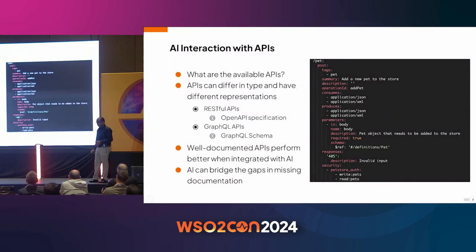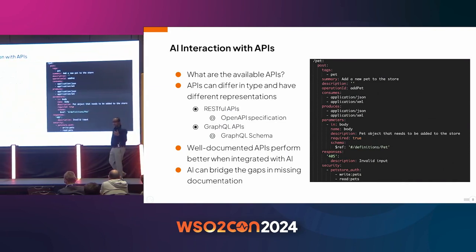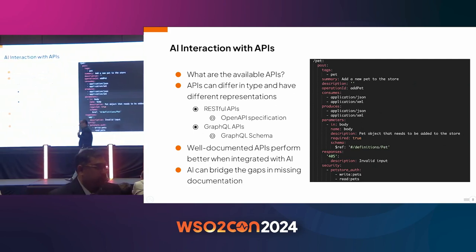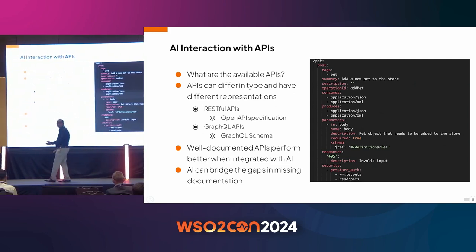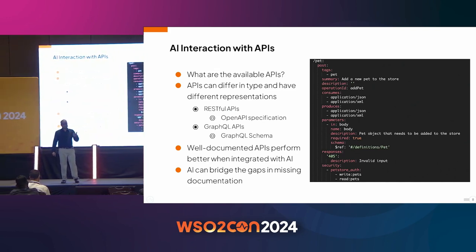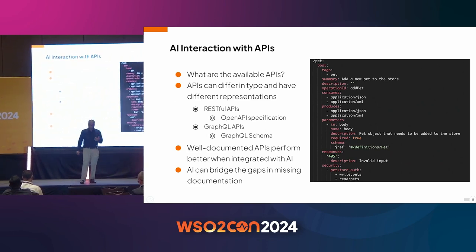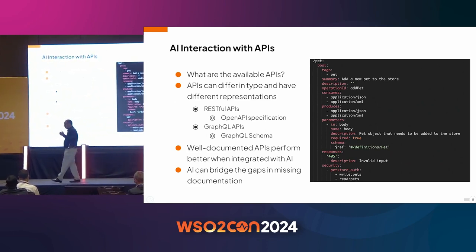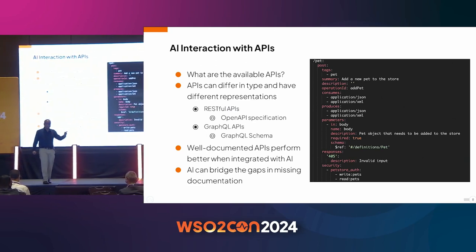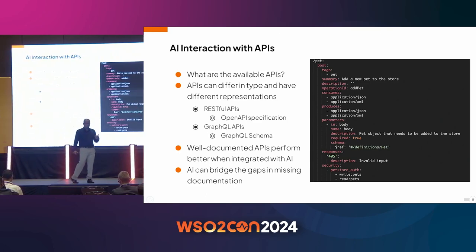APIs. They have different representations: REST APIs have OpenAPI schemas, GraphQL has GraphQL schemas, and so on. AI can interact with these APIs, so having APIs that are well-documented is very important.